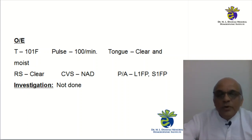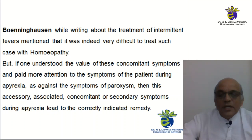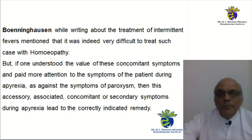When the patient was examined, the fever was identified at 101. The case was taken at a village where we were unable to do any investigations, making it very difficult to predict the basic cause of fever. Boenninghausen always mentions that when treating intermittent fevers, the most important thing to look upon is the concomitant symptoms. Concomitants represent features of the constitution of the patient. There is also emphasis — not only in the Organon but by Boenninghausen — that symptoms experienced as concomitants during the apyrexia phase lead to the most appropriate remedy of choice.